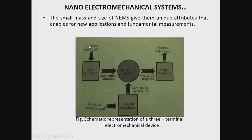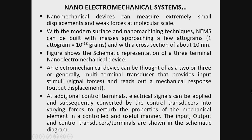One terminal is for the input signal, another is for the control perturbation signal for the control transducer, and the third is for the output signal. At additional control terminals, electrical signals can be applied as control signals, and these are converted by the control transducer into varying forces to perturb the properties of the mechanical element in a controlled and useful manner.